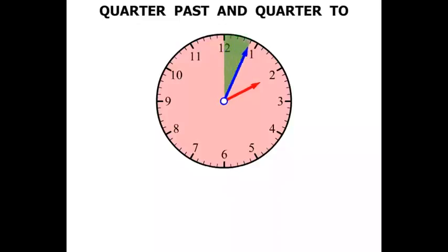Now as the minutes hand moves around, notice that it's traced a quarter of the circle, a quarter of the clock. So we say that it's quarter past two. It's gone past two o'clock by a quarter. And that in digital form is 2.15.